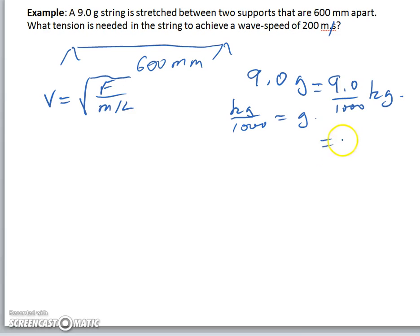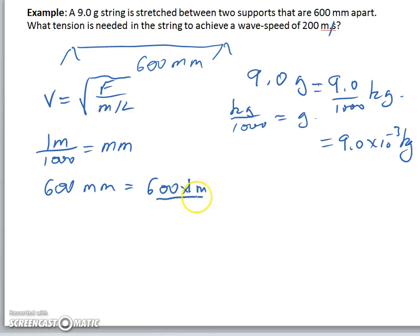Similarly, 600mm per meter divided by 1000 is equal to a millimeter. And therefore, by algebraic substitution, 600mm is equal to 600 times 1 meter divided by 1000, which is equal to 0.600 meters.